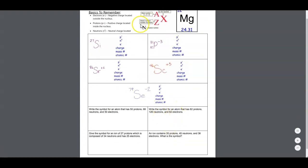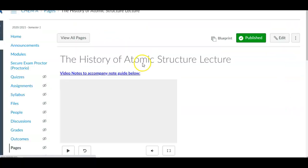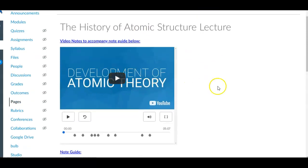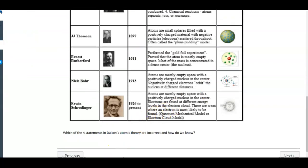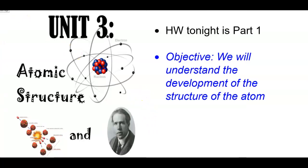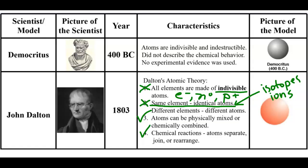I'll go through each one of these one more time in this video for you. So first, history of the atom lecture. When I open this link on Canvas, it brings me here, and you can watch the video. However, what I'm going to do is go over the highlights with you right here. So in the smart notebook that I use in class — who came up with the idea of the atom? Well, it's many scientists over a long period of time. Democritus is the first guy. He says that atoms are indivisible and indestructible — basically, he just thought up the idea of the atom.